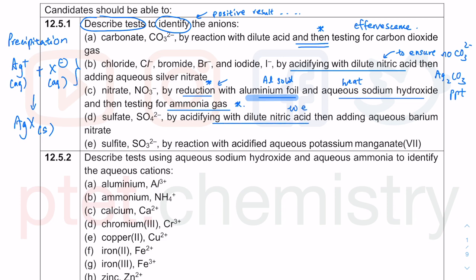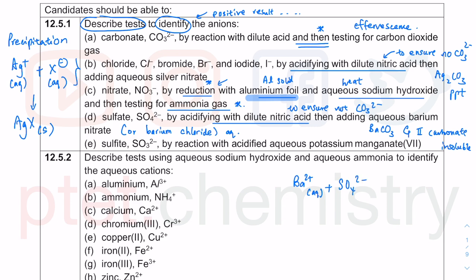Sulfate is tested by first acidifying with dilute nitric acid to ensure no CO₃²⁻ is present, since barium carbonate (Ba²⁺ + CO₃²⁻) is a group 2 carbonate and insoluble in water. After acidifying and confirming a colorless solution remains, we add barium nitrate or barium chloride (both soluble, aqueous). Ba²⁺ (aq) + SO₄²⁻ (aq) → BaSO₄, a white insoluble solid — a classic precipitation reaction.